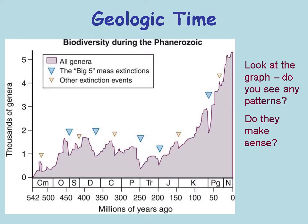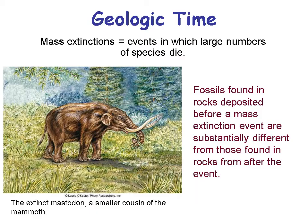We think each of those extinctions conforms to a near-Earth object that hit the Earth, but we're still looking for that evidence — it's a hypothesis at this point. A mass extinction is when a large number of species die. From one side of a mass extinction to the other, one type of rock has one type of species and the rock above it has a different type of species.